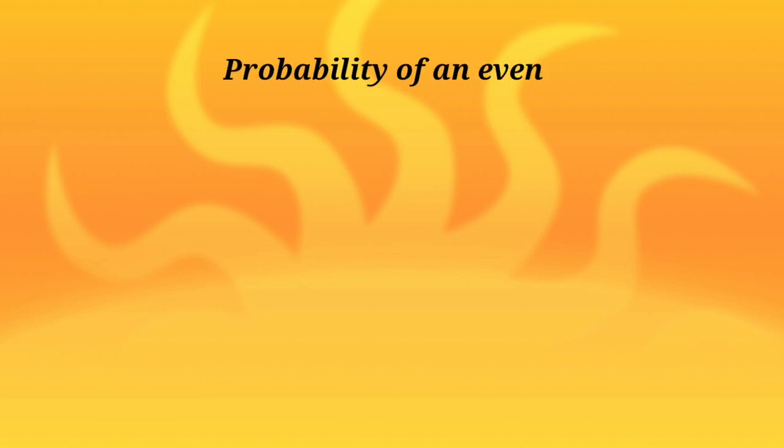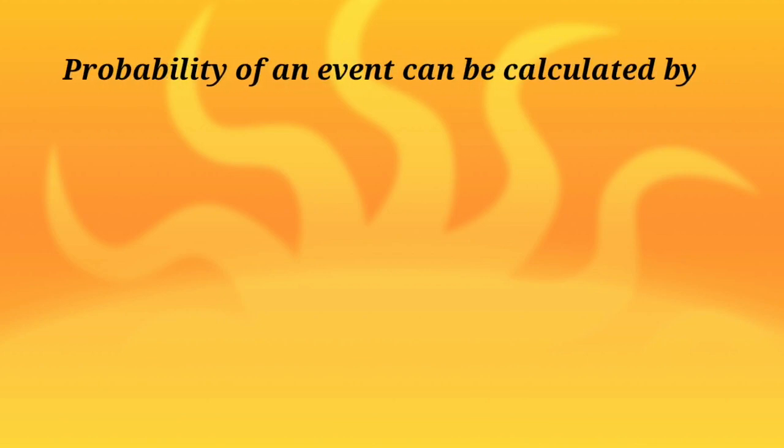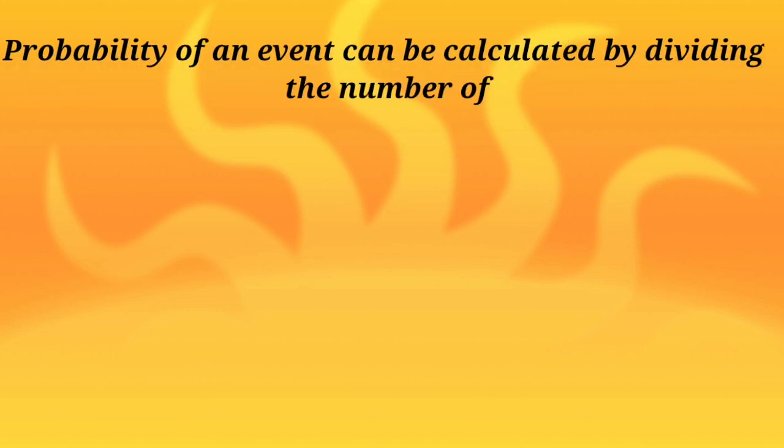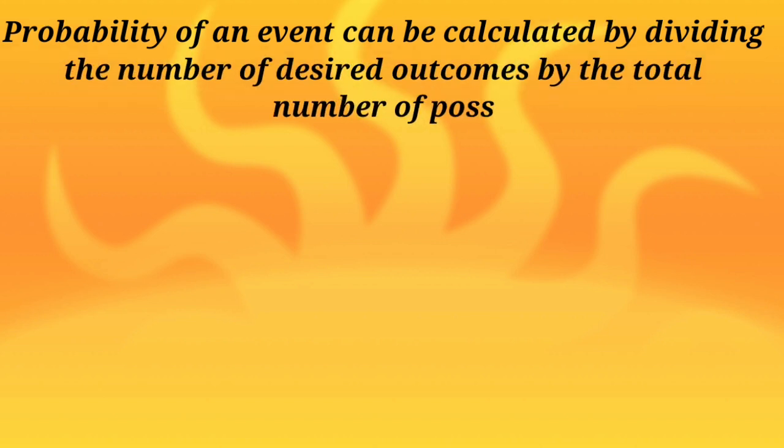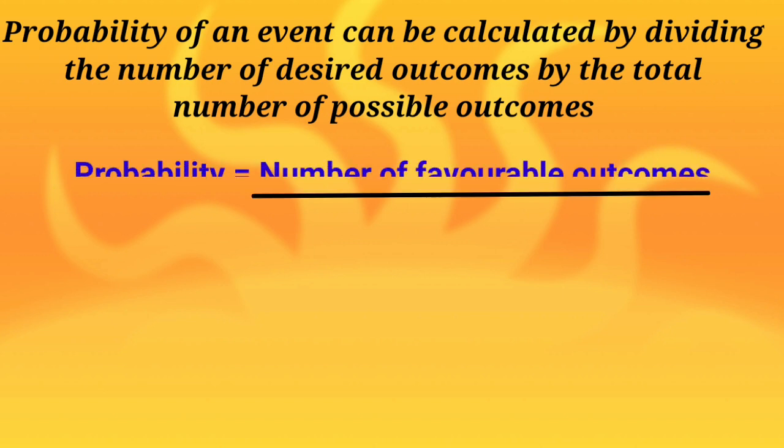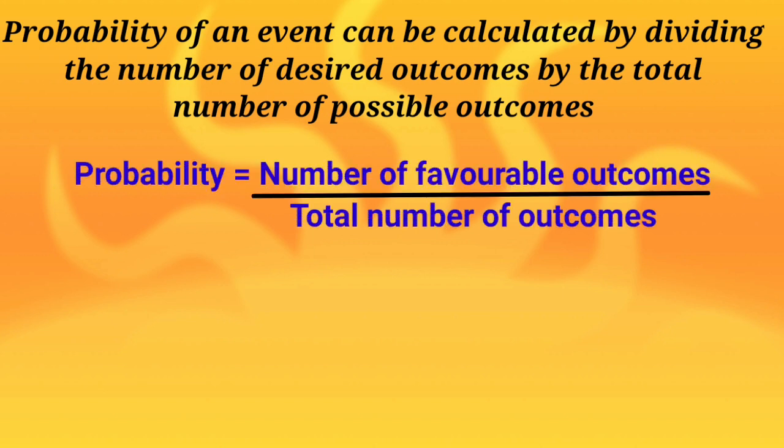Probability of an event can be calculated by dividing the number of desired outcomes by the total number of possible outcomes. So probability formula is number of favorable outcomes upon total number of outcomes.